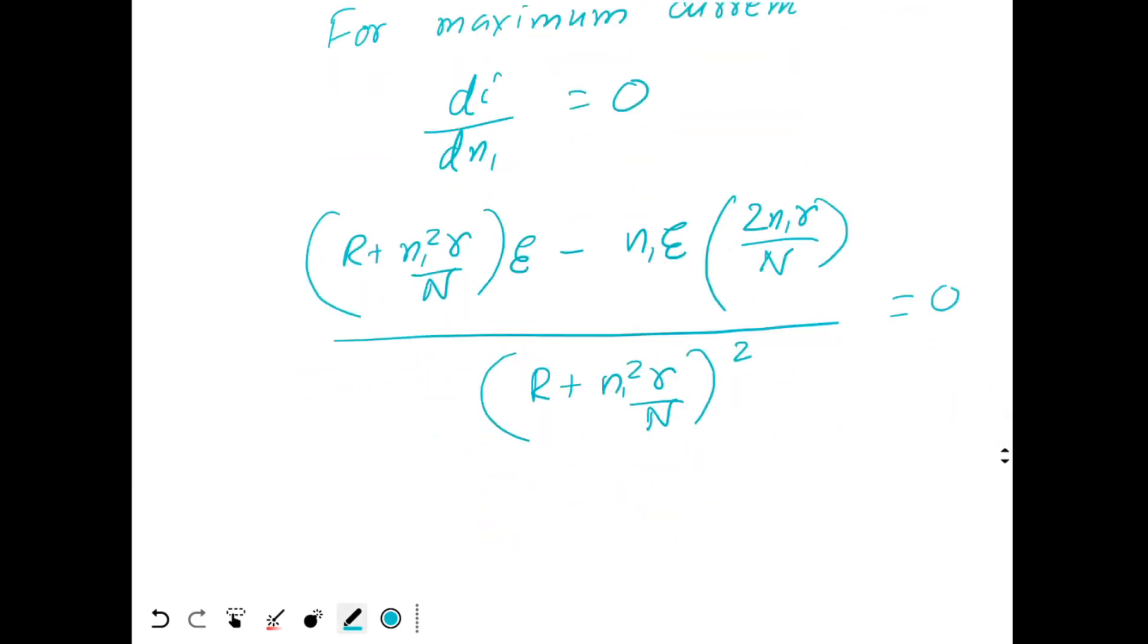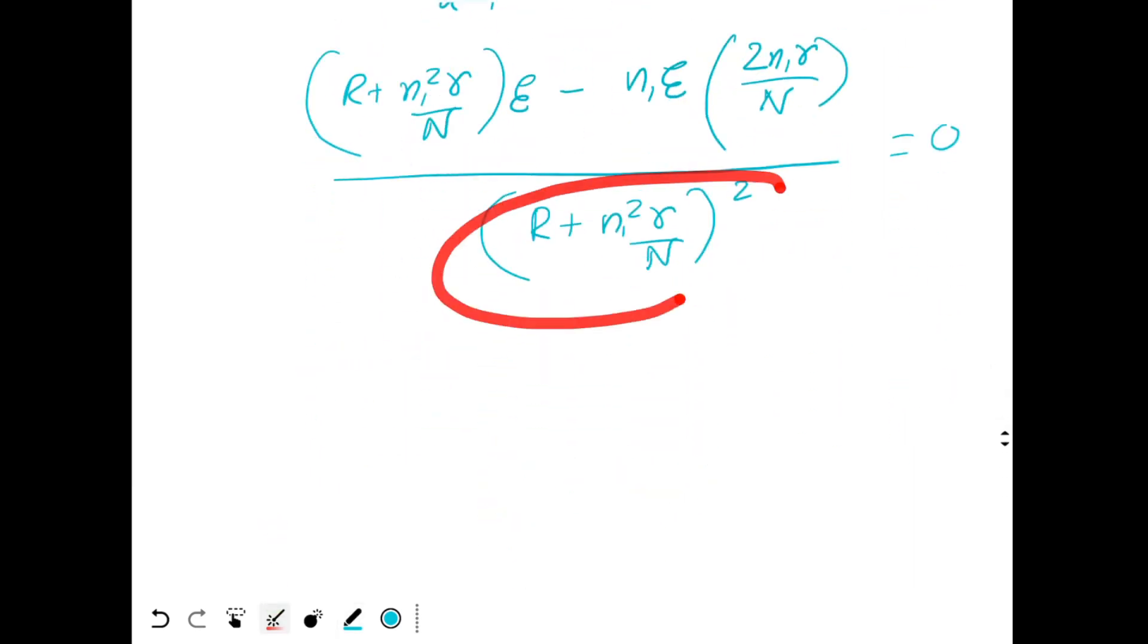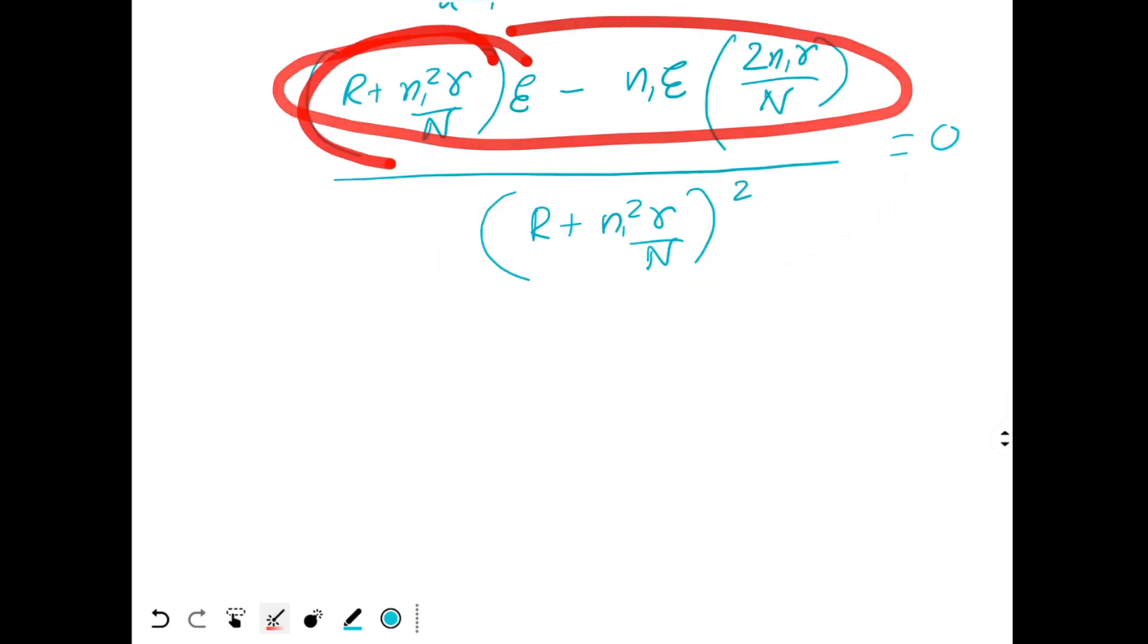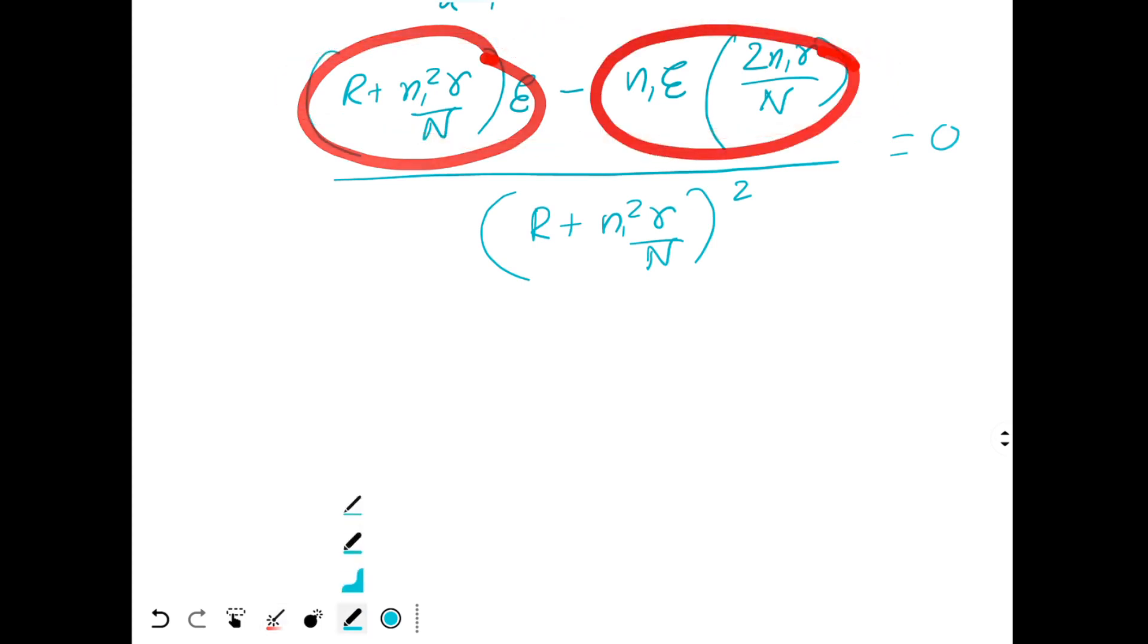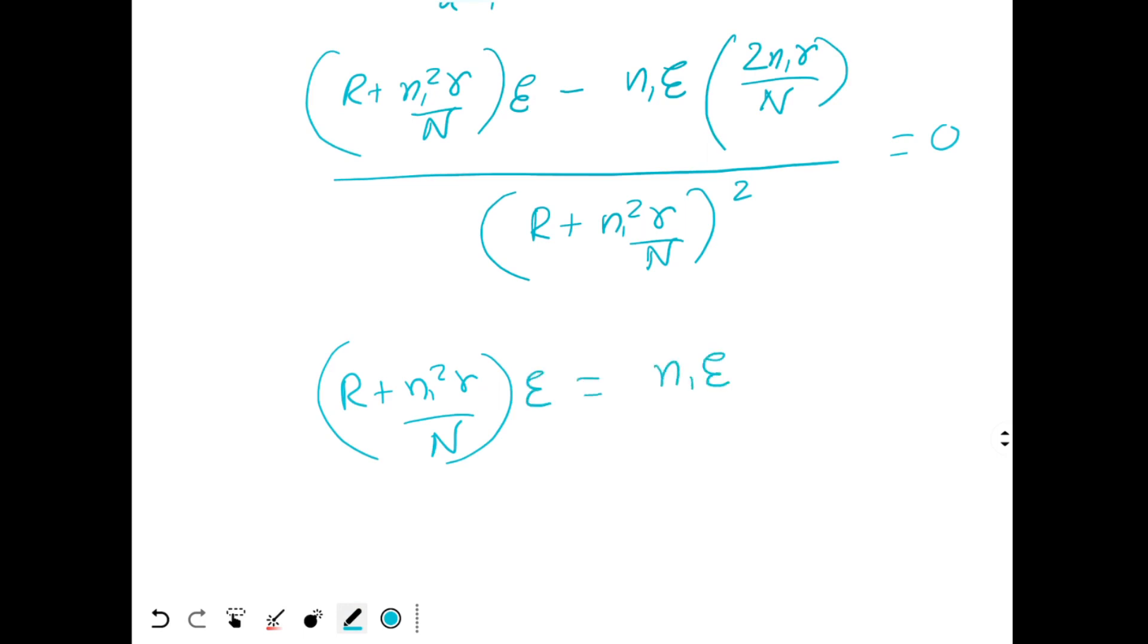Take this on the other side it becomes 0. This difference should be equal to 0. That means this function should be equal to this function. So I have R plus N1 square r by N times E should be equal to N1 E times 2 N1. So I will write this N1 square 2 E N1 square r by N. Let's move E over here, it's not needed. So R is equal to N1 square r by N.